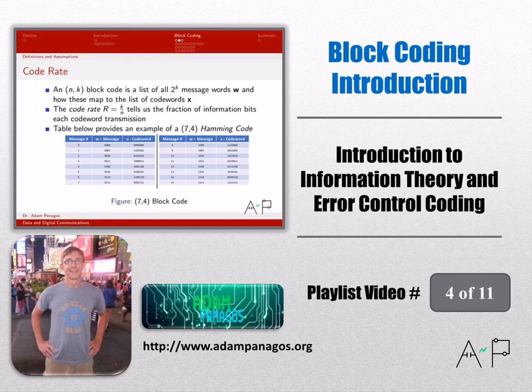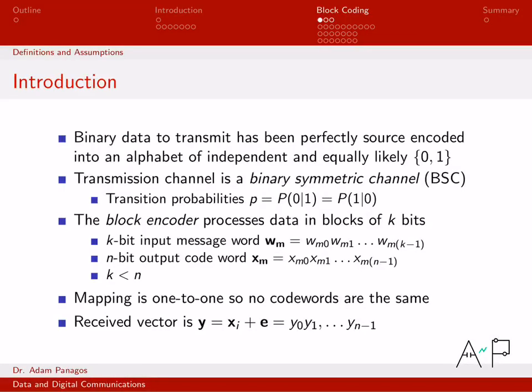We're going to start talking about block coding here. The first few videos in this playlist talked about channel capacity, and that channel capacity was the upper limit at which we could reliably communicate over a channel. By reliably communicate, that means have arbitrarily low probability of bit error rate. The big result there was that Shannon proved that there exist error control codes that let you achieve that arbitrarily low error rate. So what are these error control codes that exist? We want to talk about a specific type of error control codes called block coding.